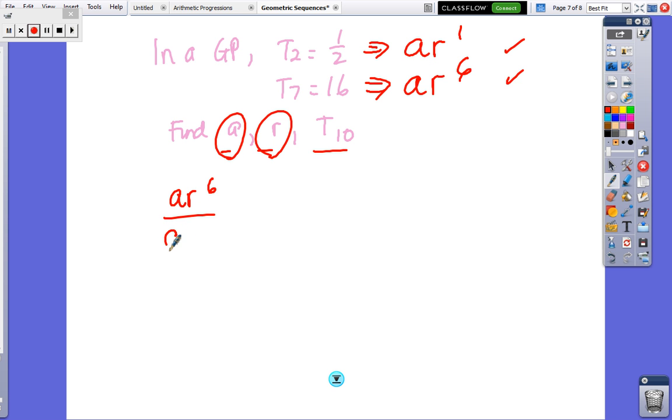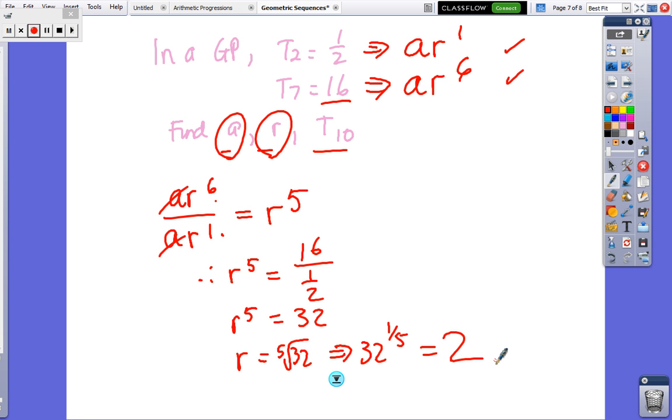So if I've got AR^6 over AR^1, the A's cancel out, and then R^6 divided by R^1 equals R^5. And R^5 is T7 divided by T2, which equals 32. And then on your calculator, the fifth root of 32, which is the same as 32 to the power of 1/5, and on your calculator that equals 2. So to get rid of the 5 here, you take the fifth root, or it's a fractional indice. So we've got R equals 2. And then we just sub into one of the equations. So we've got AR to the power of 1 equals 1/2. So A times 2 equals 1/2. And then divide both sides by 2, so you get A equals 1/4. That's our second answer.